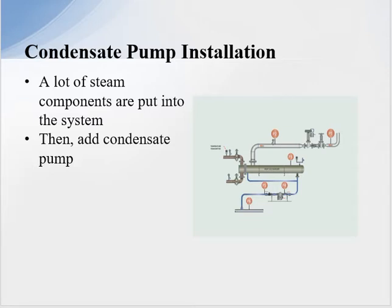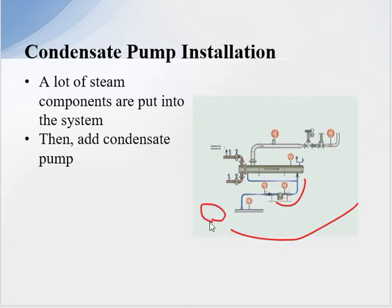In condensate pump installations, a lot of components are put into the system and then we add a condensate pump. This is a common application — we have a shell and tube heat exchanger coming down through a steam trap and then into a condensate return system. The question is: do we need a condensate pump there to get the condensate back? It depends on a number of variables, and we have to look at it as a system, not just a single component.